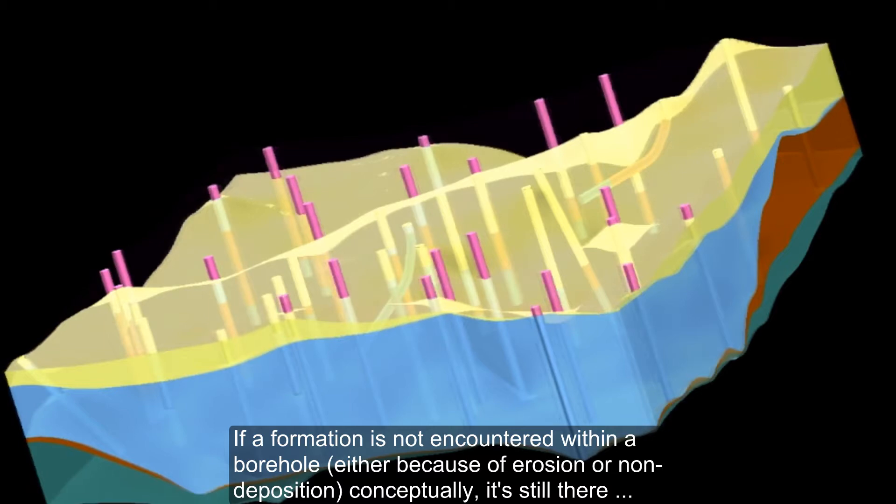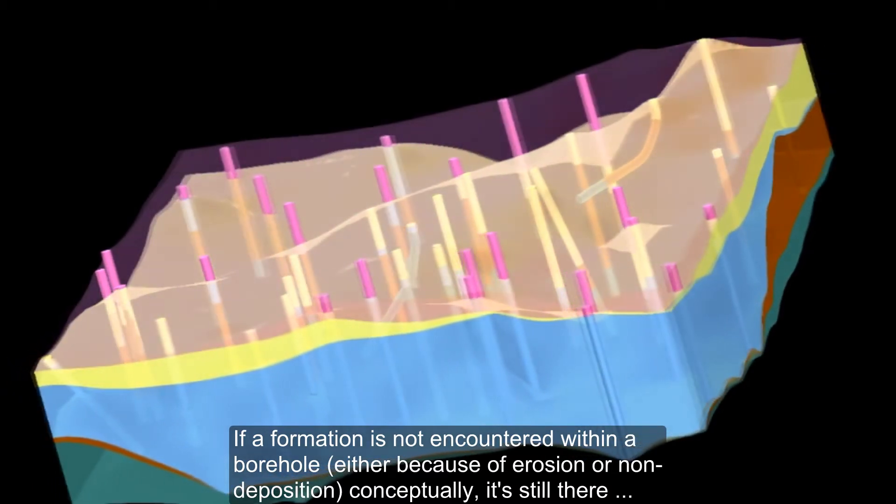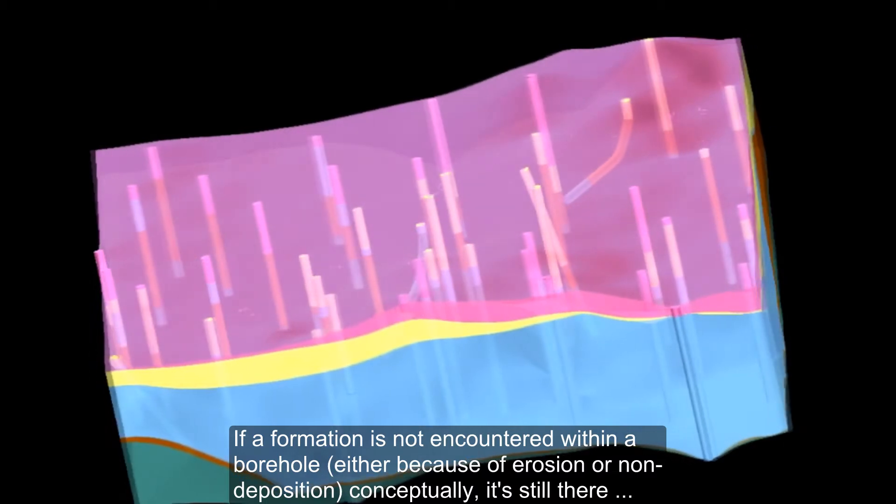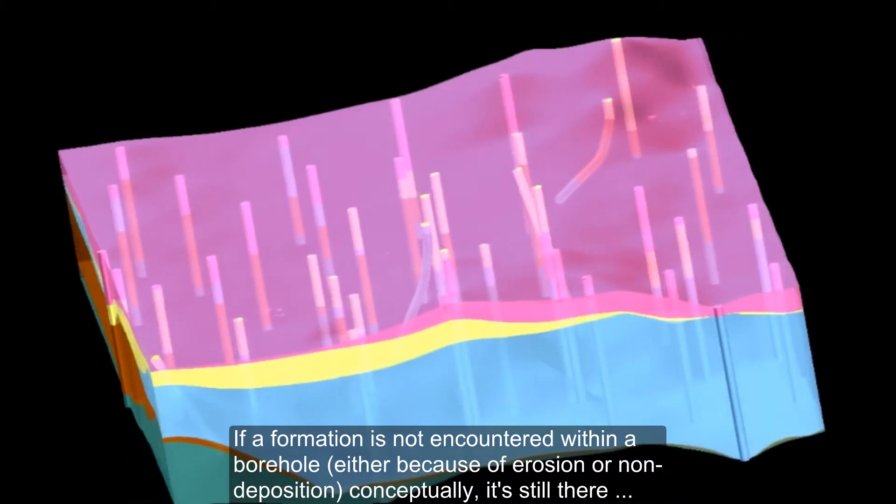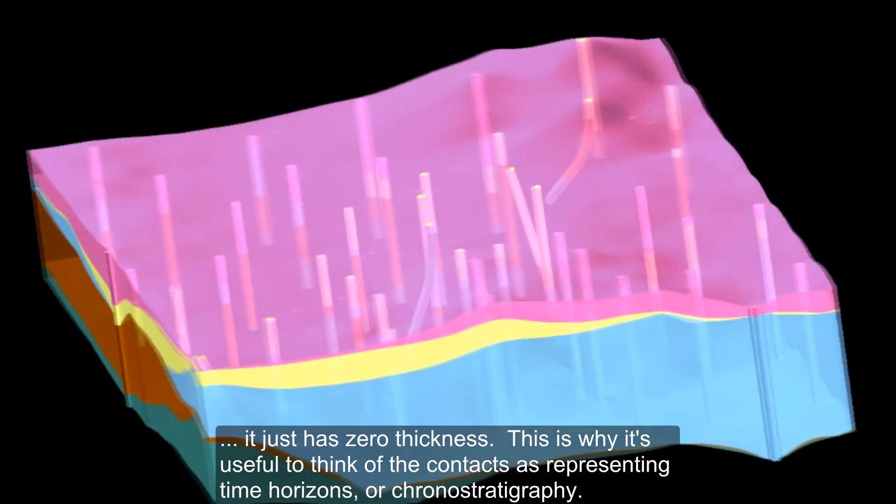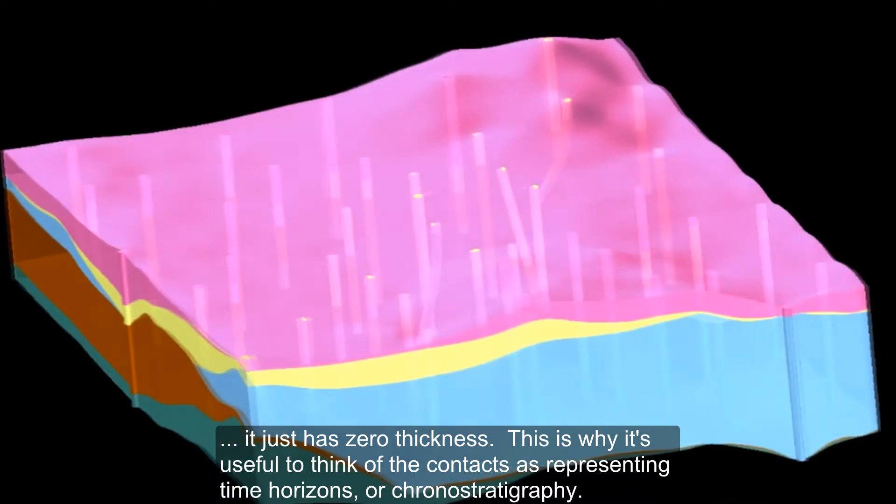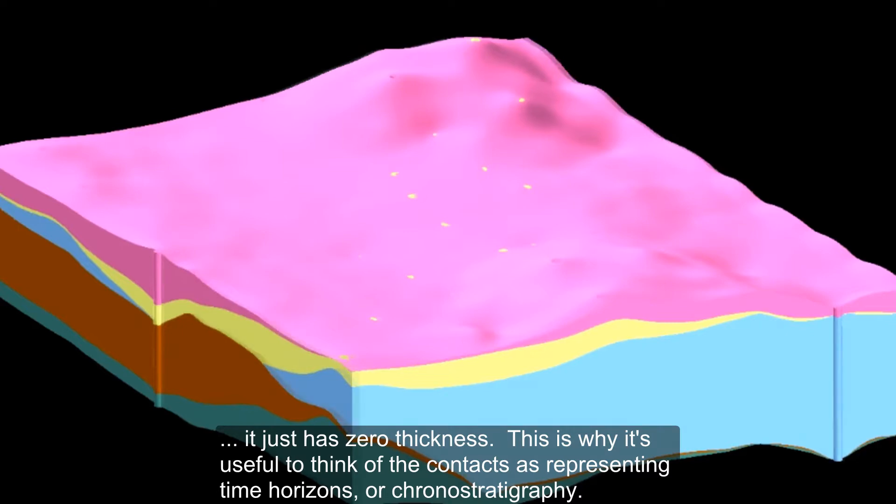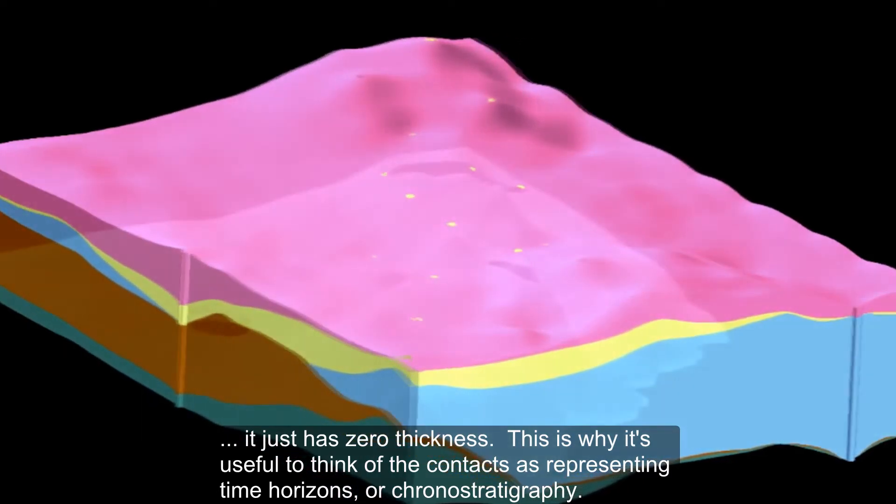If a formation is not encountered within a borehole, either because of erosion or non-deposition, conceptually it's still there. It just has zero thickness. This is why it's useful to think of the contacts as representing time horizons or chronostratigraphy.